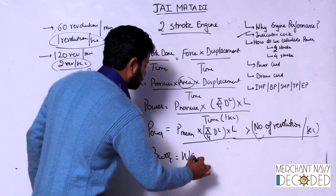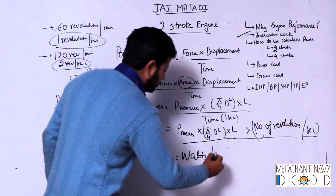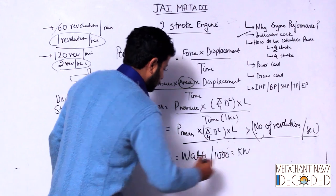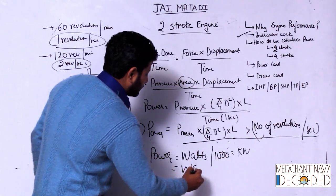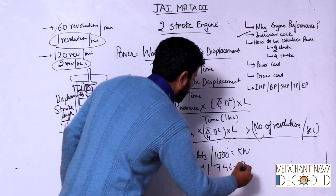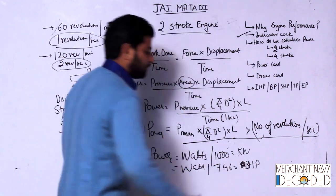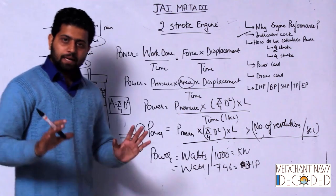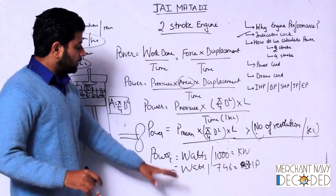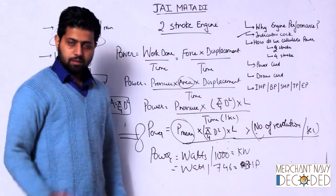This gives power in watts. If you divide by 1000 you get kilowatts. If you divide by 746 you get horsepower, or BHP. The only thing remaining is how do we calculate P mean.